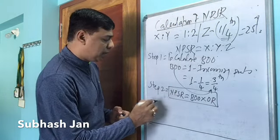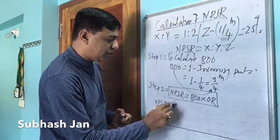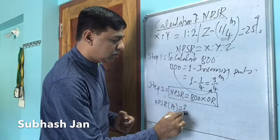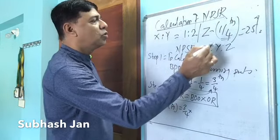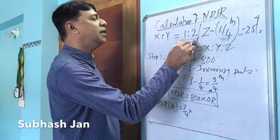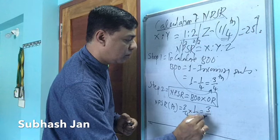Now you substitute NPSR of, let's take X first. What is balance of 1? Balance of 1 is three-fourth multiplied by old ratio. What is that old ratio? 1 is to 2. So 1 is to 2 is nothing but one-third and two-third. One-third, that is 3 upon 12.